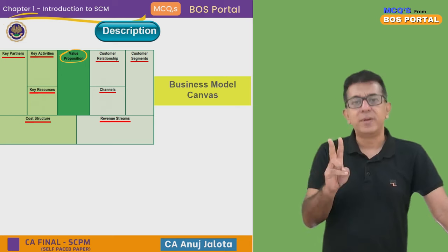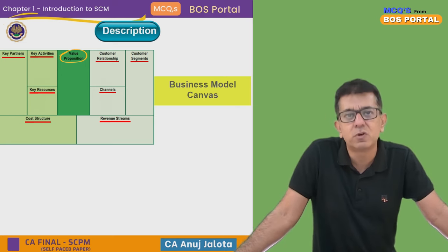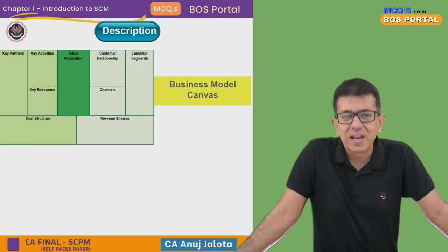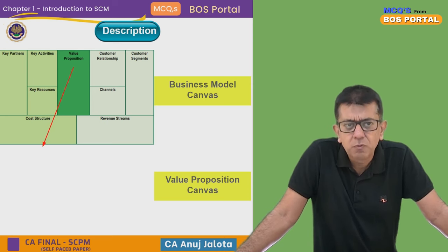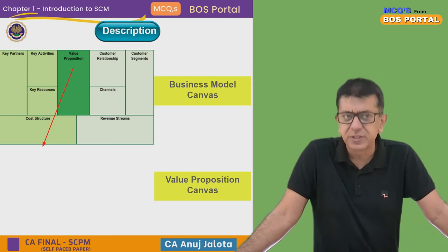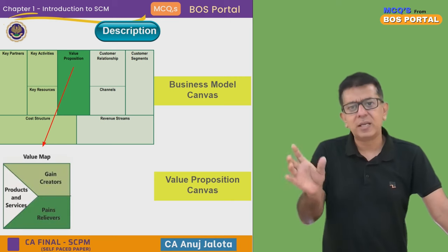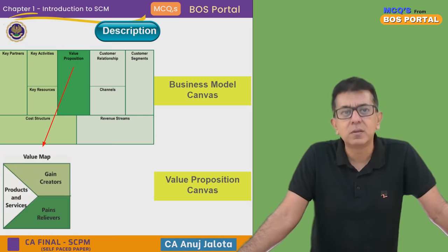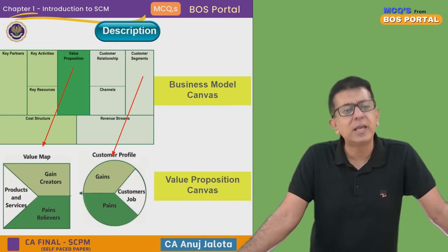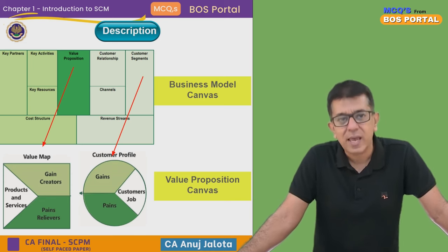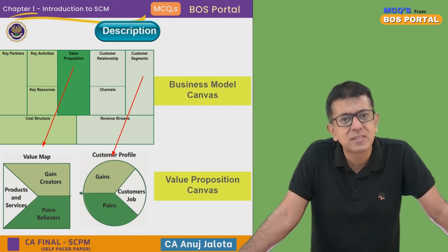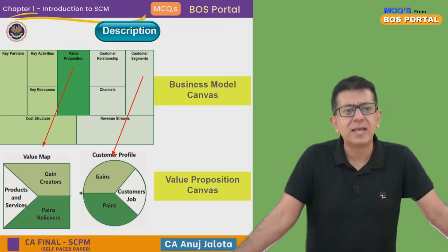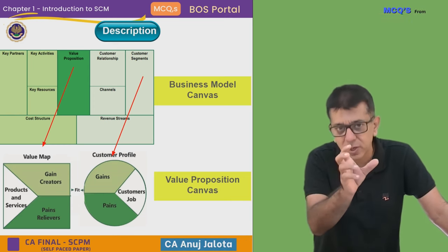Based upon two elements of this Business Model Canvas, a more detailed analysis was done. The Value Proposition was expanded further, and one part came in the form of a Value Map. For any business to be successful, the Value Map has to be matching with the Customer Profile — and that is where the word 'fit' comes in, which you see between Customer Profile and Value Map.